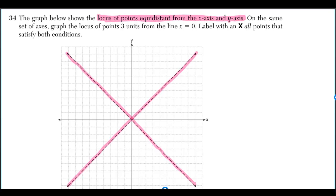They've already graphed the locus of points equidistant from the x-axis and y-axis. They could have asked you to do that yourself, and you would have had to realize that to be equidistant from the x-axis and y-axis, you have to have an equal distance to the x-axis as you do to the y-axis.